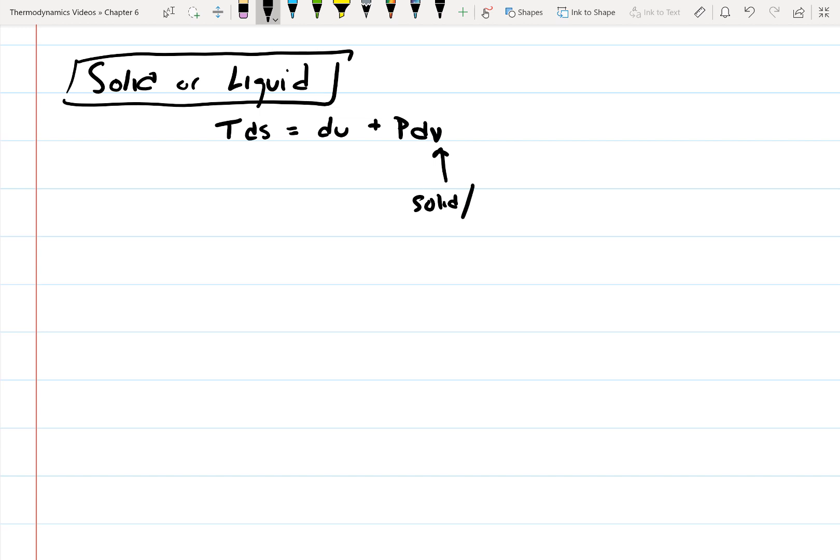So solids and liquids are often incompressible. So basically, dV is going to approximately be zero, because since it's incompressible, it's not going to change much. So then this relationship becomes TDS is equal to DU.